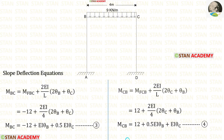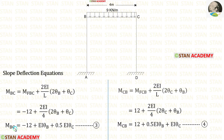Now let us make the slope deflection equations in beam BC. In the equations, let us apply the fixed end moments. The length of BC is 4. Finally, in beam BC we have made two equations.